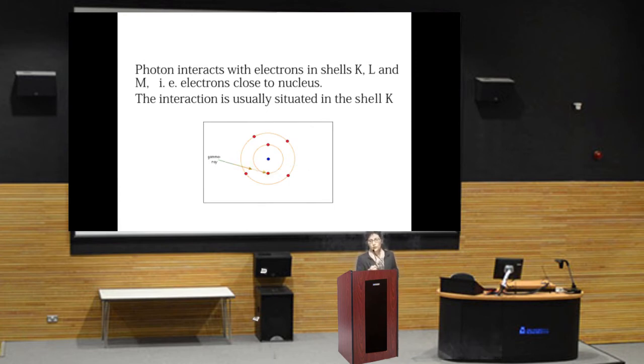In this figure, you can see the gamma ray is striking the K shell electron and it is emitted out in the form of photoelectron.